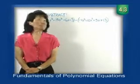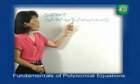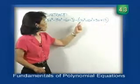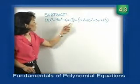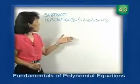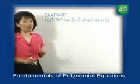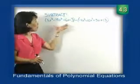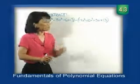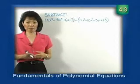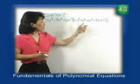Now let's subtract some polynomials. We're going to subtract: 5x to the 3rd minus 15x squared plus 6x minus 3, subtract negative 4x to the 3rd minus 10x squared plus 5x plus 13. Each of these polynomials has four terms — there is no special name for a polynomial with four or more terms, we just call them polynomials. The difference between adding and subtracting polynomials is that the subtraction sign changes the sign of every term in the second polynomial.